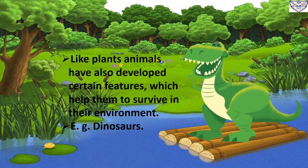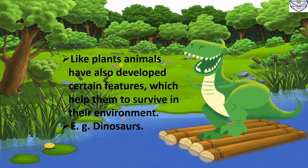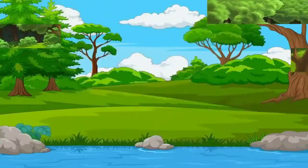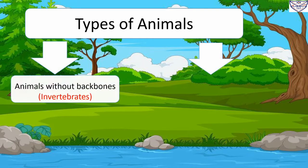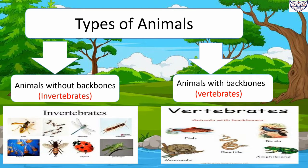Like plants, animals have also developed certain features which help them to survive in their environment. Animals can be divided into two groups based on the presence or absence of a backbone. Animals without a backbone are called invertebrate animals, and animals with a backbone are called vertebrate animals. Here in this picture you can see some examples of both.